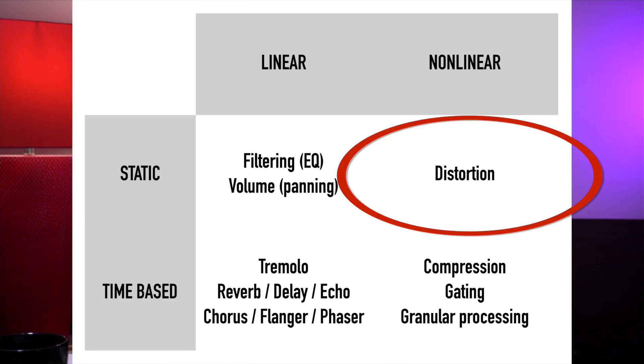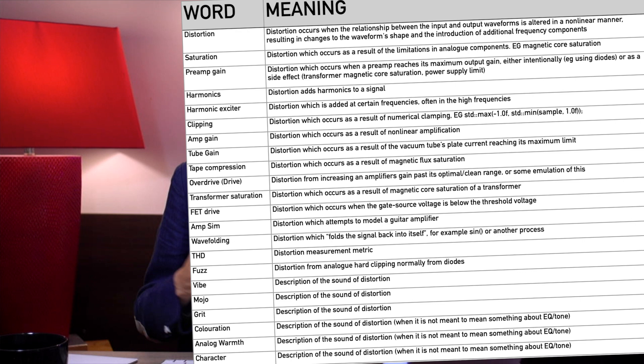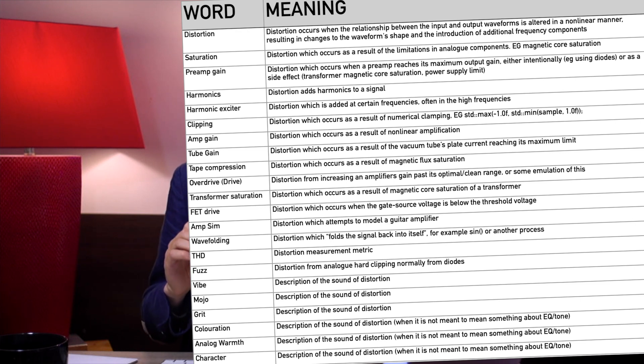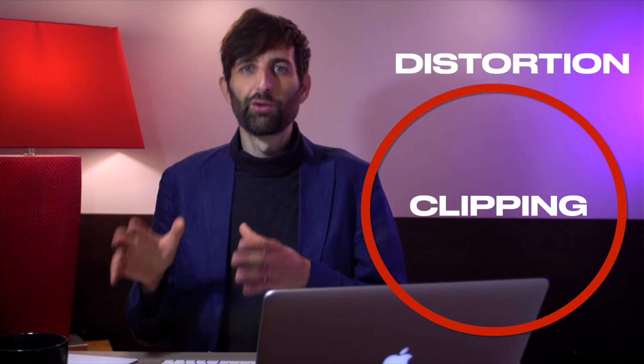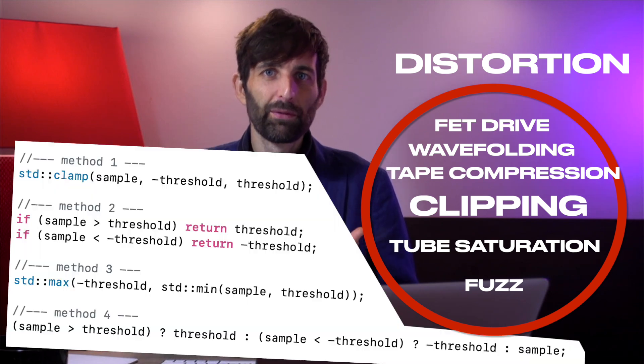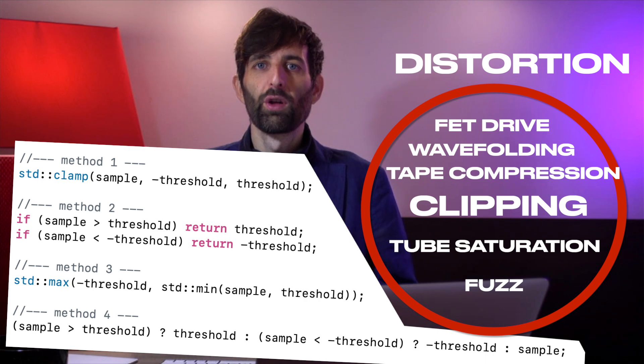So where do tape compression, transformer saturation, drive, clipping, fuzz, analog warmth, tube colouration, mojo, and all the rest of these terms fit in our quadrant? They all fit in the same place, because they're all distortion. There are different types of distortion, but there's no real need to use a bunch of different words. If we want to be specific about the transfer function, we can talk about hyperbolic tangents and the like. Clipping is a specific member of the set of distortion — specifically, distortion which uses a clamping function.